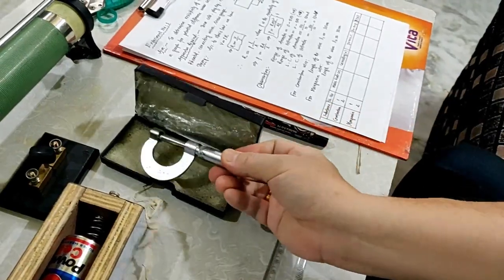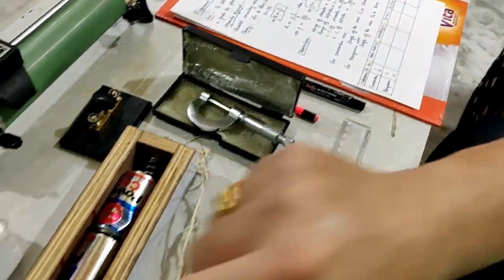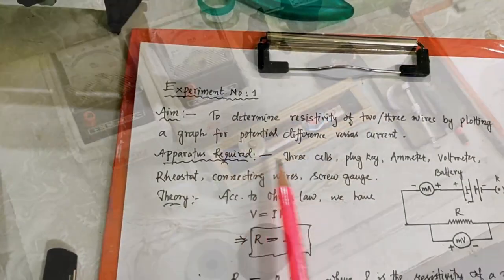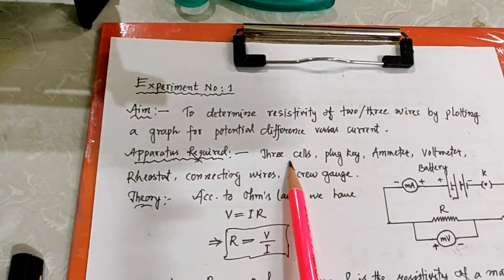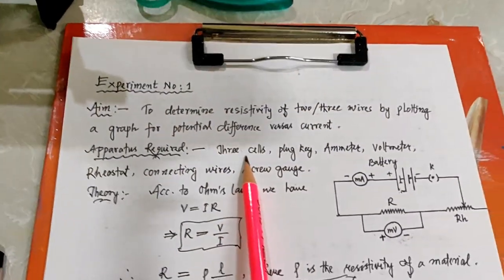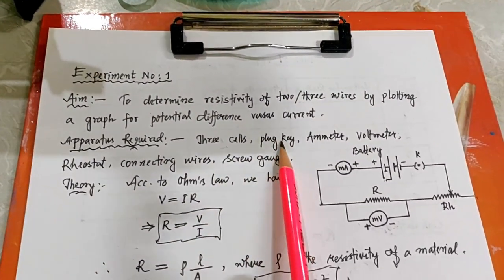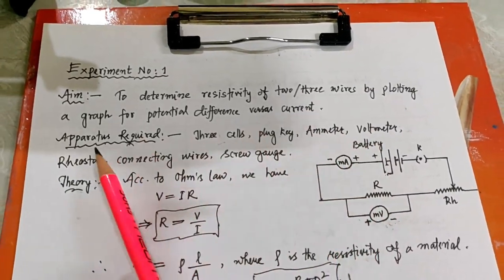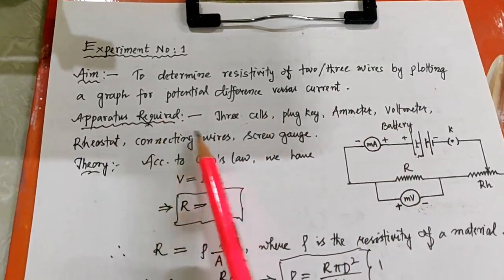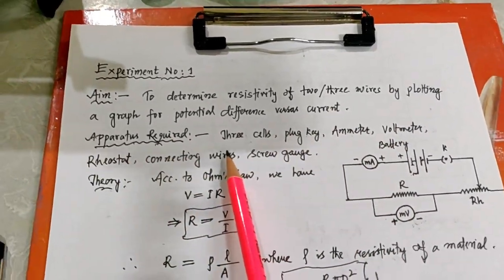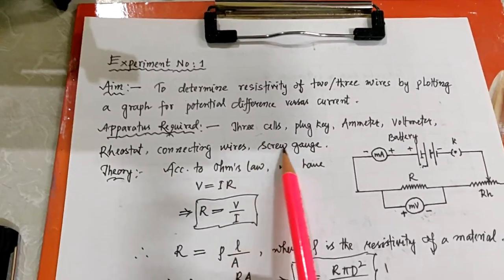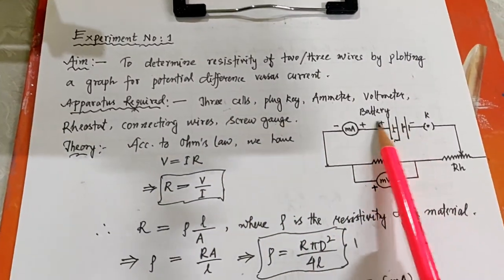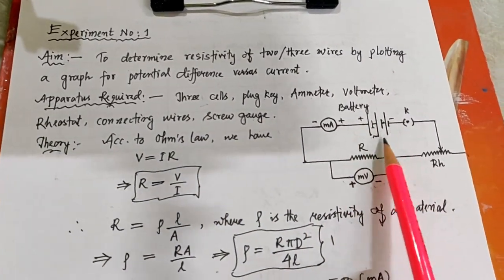After explaining all the apparatus, we have used three cells, one plug key, one ammeter, one voltmeter, one rheostat, connecting wires, and a screw gauge. The circuit diagram is already given here.